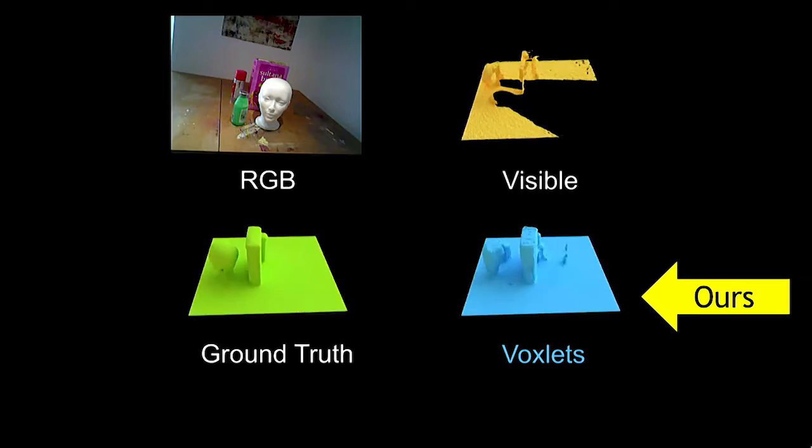This is supervised, and interestingly, there's no overlap between the test objects and the training objects, which is an important point. It says you don't have to recognize your objects in order to have an estimate of what the backside looks like.